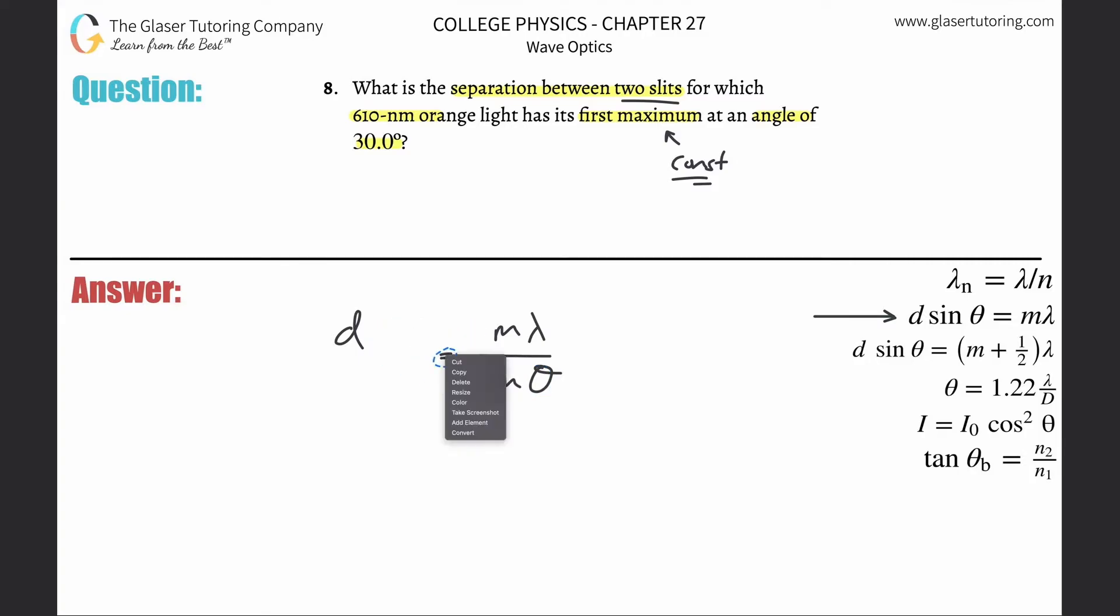Alright, and now we've got everything we need, so we just plug it in. First order maximum means m is one. The wavelength is 610 nanometers - careful, you need that in meters, so multiply that by 10 to the minus ninth. Then divide that whole thing by sine of 30. Since it's in degrees, make sure your calculator is in degree mode.